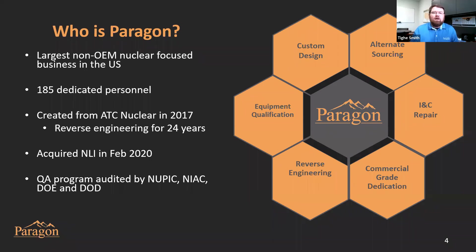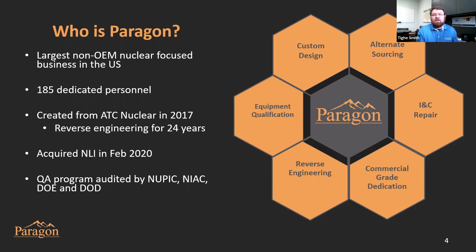Let me talk for just a minute on who Paragon is. We have the honor and distinction of being the largest non-OEM nuclear-focused business in the United States. We have 185 employees at our three locations in Tennessee, New York, and Texas. Paragon was formed from ATC Nuclear in 2017, and as part of ATC Nuclear's history back to being Spectrum Technologies, the folks within Paragon have been focused on reverse engineering for 24 years.